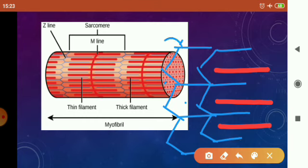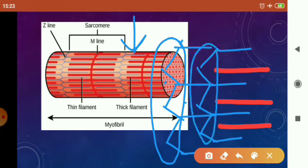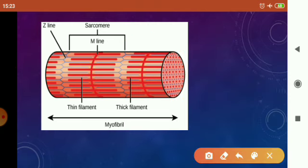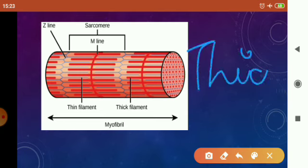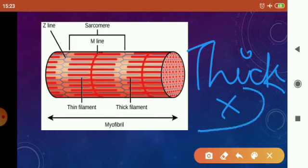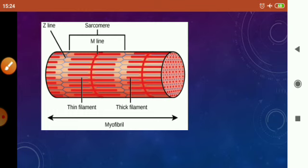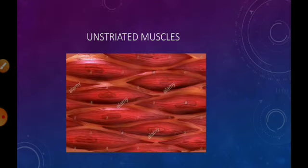Earlier the position of the thin filament was in one place, but as the muscle received impulses from neurons for contraction, it moved inward. This is how the thin filament slides over the thick filament — the sliding of the thin filament over the thick filament results in shortening or contraction of the muscle fibers. Importantly, the thick filament does not slide; it makes the thin filament slide over it.